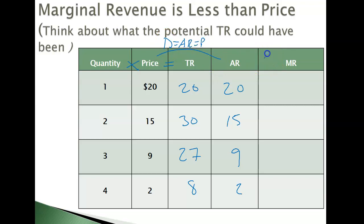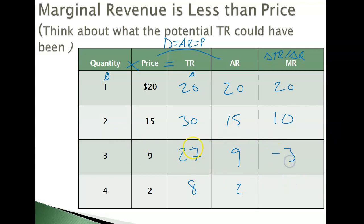Now let's check marginal revenue — change in total revenue divided by change in quantity. Starting from quantity 0 with total revenue 0: 0→20 divided by 1 = 20; 20→30 divided by 1 = 10; 30→27 divided by 1 = −3; and 27→8 gives −19. For the first unit, marginal revenue equals price at 20. But at the second unit, price is 15 and marginal revenue is only 10. Then 9 versus −3. The gap gets larger and larger.